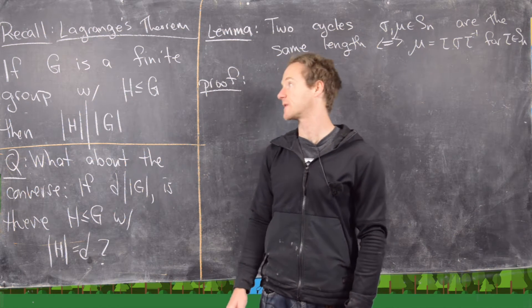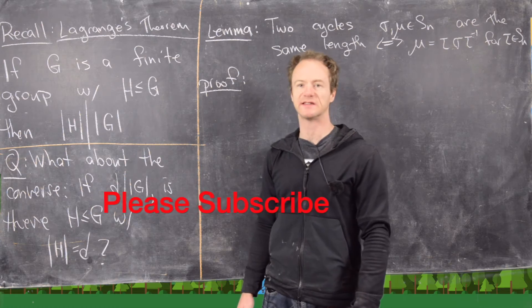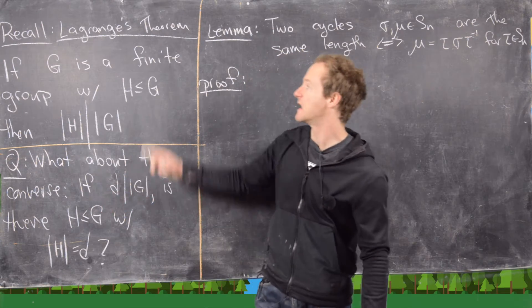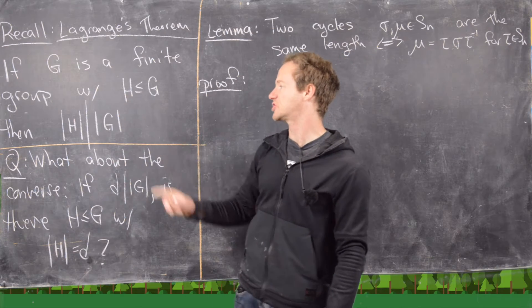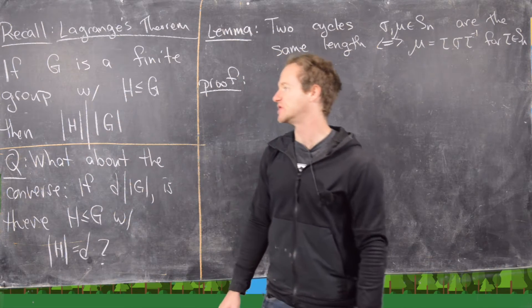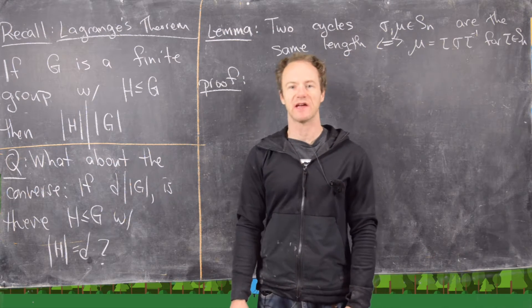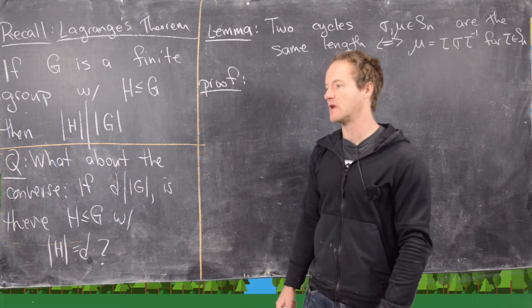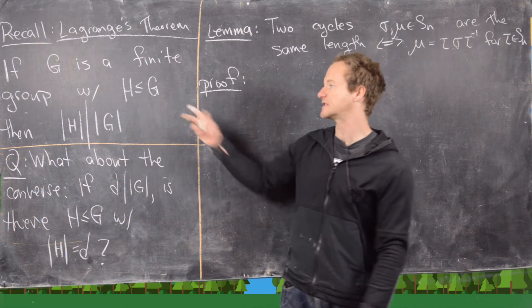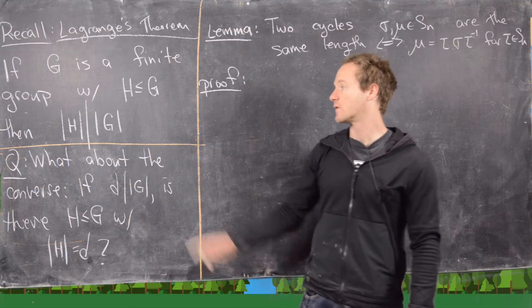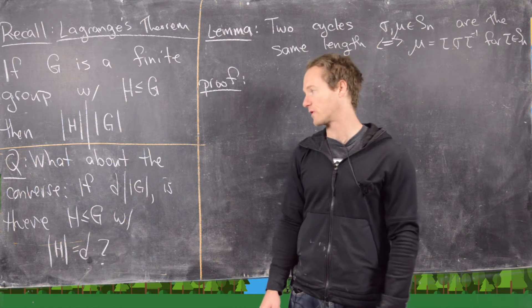In a previous video we looked at something called Lagrange's Theorem. Let's recall one of the things that follows from it: if G is a finite group with a subgroup H, then the order of H divides the order of G. Lagrange's Theorem actually gave us a stronger statement involving the index of the subgroup and the number of cosets, but this is what we're going to focus on. The order of the subgroup divides the order of the group — it's a very important fact.